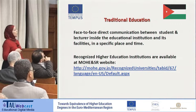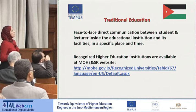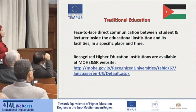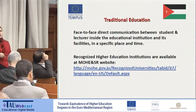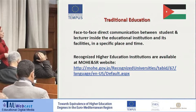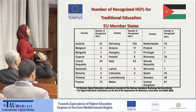We have two kinds of education. Traditional education is defined as face-to-face direct communication between student and lecturer inside the educational institution, in a specific place and time. The student has to be in the same country, attending all the lectures at the institution. Lists of recognized higher education institutions are available on the website.